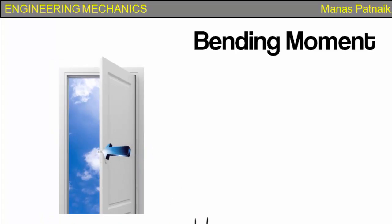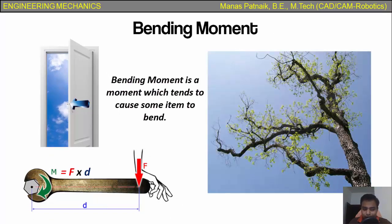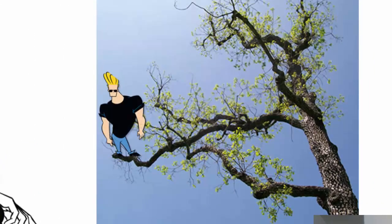Now let's take a look at bending moment. It's a moment which tends to cause some item to bend. For example, if Johnny Bravo sits at the end of a tree branch, he's causing it to bend.